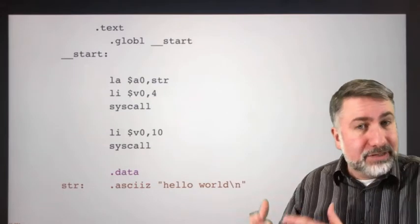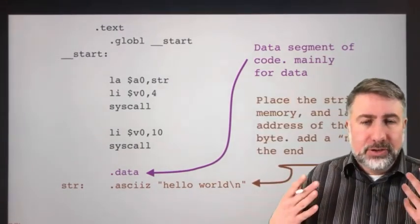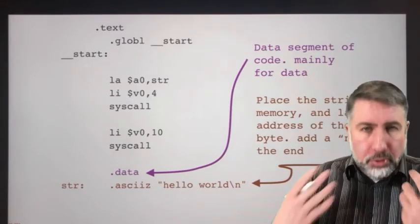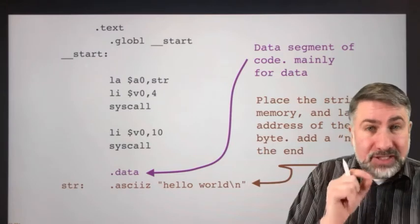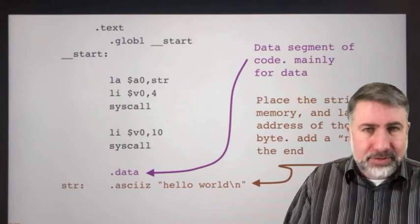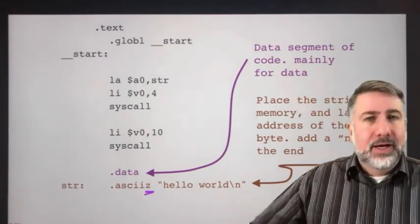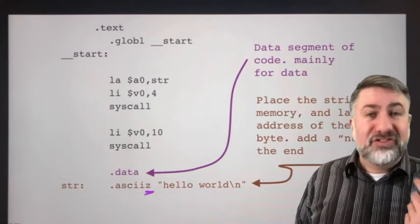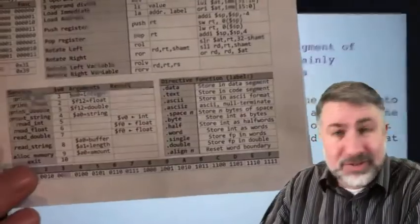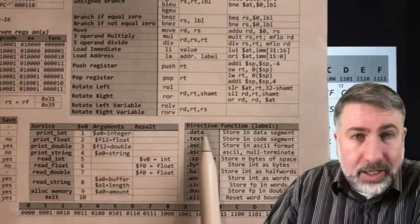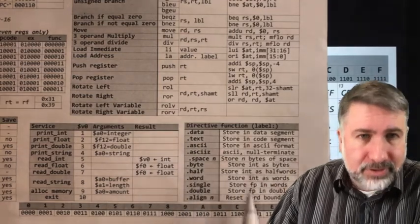Finally we have a data segment. The data segment is all of the data that's going to live in the data memory of the machine. We use dot data to start the data segment, and then we use an assembler directive called dot asciiz to put the ASCII numbers into the data segment for us. Each ASCII character is 8 bits long, memory is 8 bits wide, so each character is at a single address and four of them together make a word. This string is going to be put into memory and then a null character is going to be put at the end.